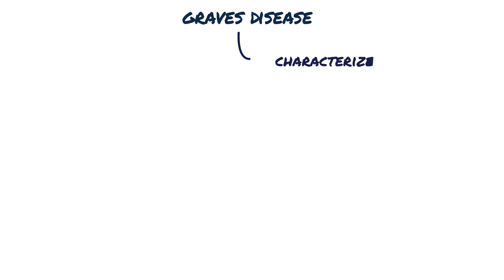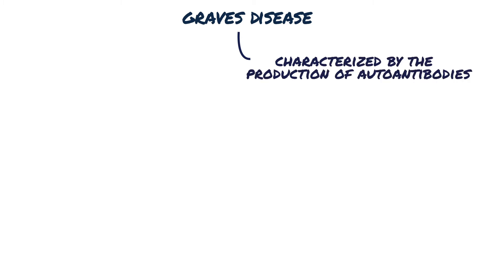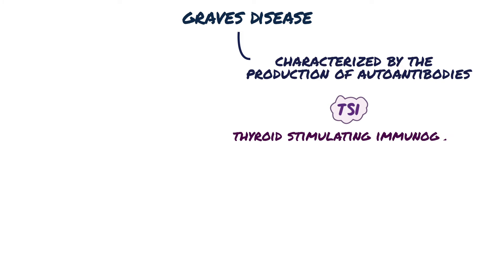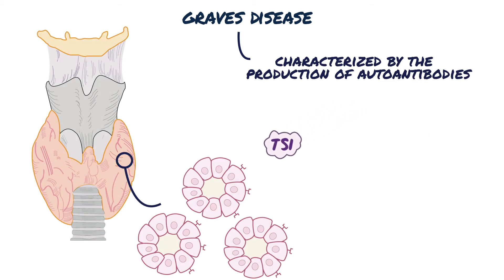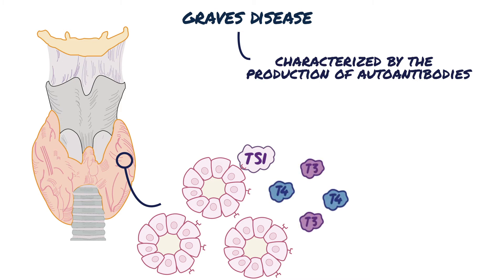Graves' disease is an autoimmune disorder characterized by the production of autoantibodies against multiple thyroid proteins. The most common antibody subtype, known as thyroid-stimulating immunoglobulin, or TSI, is observed in approximately 90% of patients with Graves' disease. TSI binds to the TSH receptor and mimics its actions, increasing the release of thyroid hormones, which results in hypothyroidism.